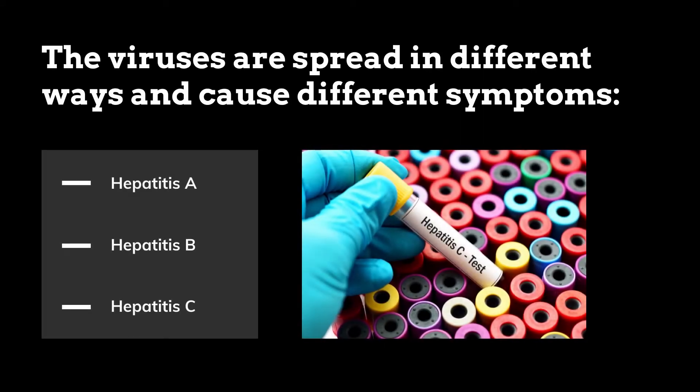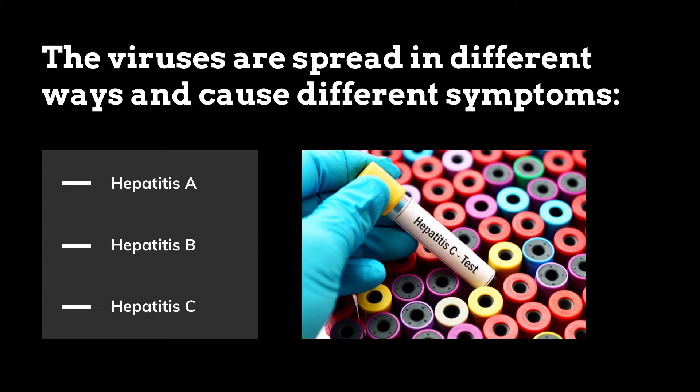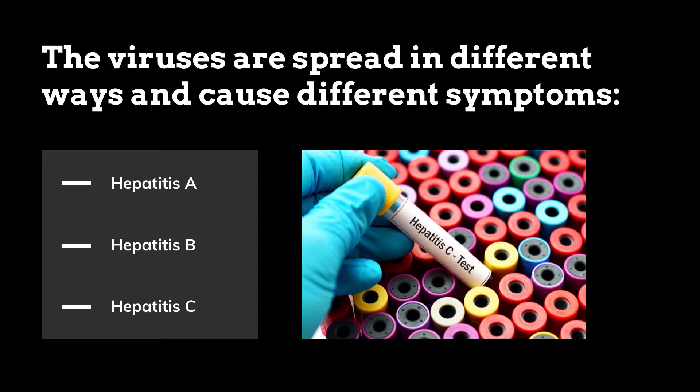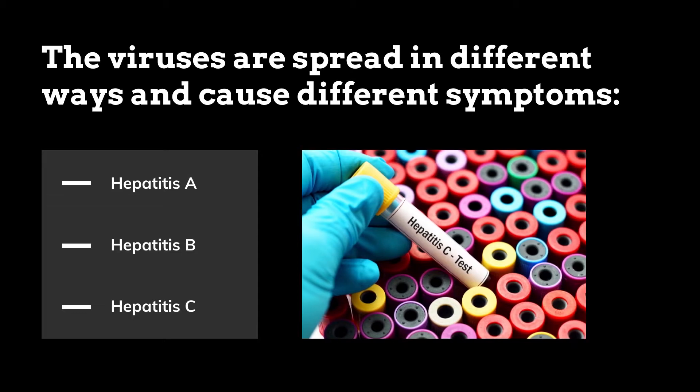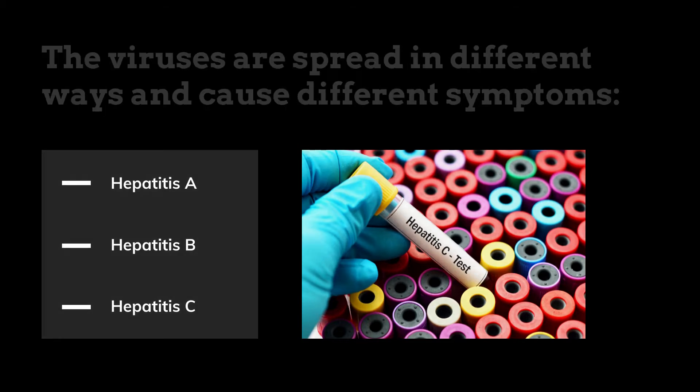Hepatitis C is most often spread by contact with infected blood, usually through sharing of hypodermic needles. Though uncommon, it can also be spread through sexual contact with an infected person. Many people with Hepatitis C develop chronic liver disease and cirrhosis.